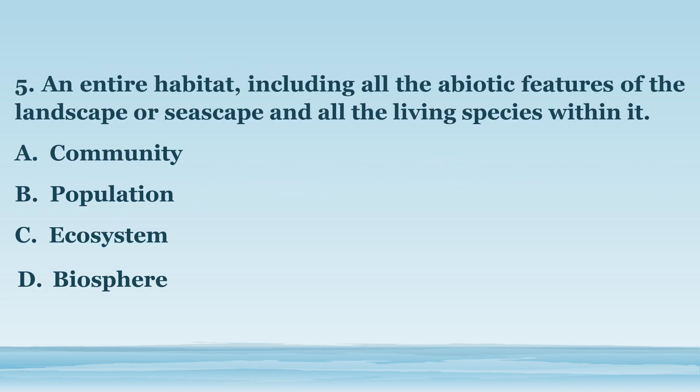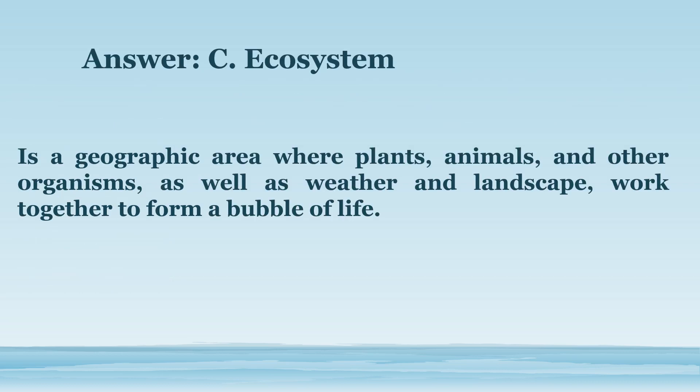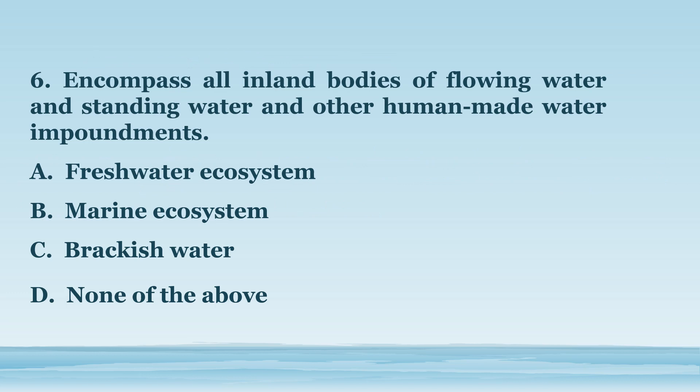Number 5. An entire habitat, including all the abiotic features of the landscape or seascape and all the living species within it. A. Community. B. Population. C. Ecosystem. D. Biosphere. The answer is letter C. Ecosystem. Is a geographic area where plants, animals, and other organisms, as well as weather and landscape, work together to form a bubble of life.